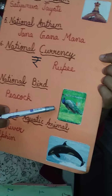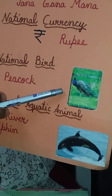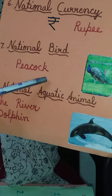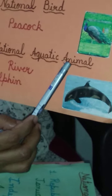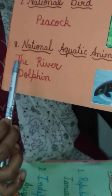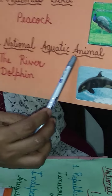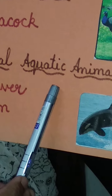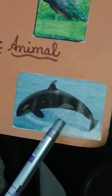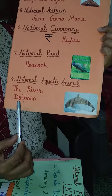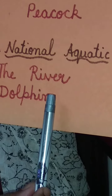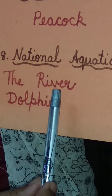This is our national bird. What was our national bird's name? It is called the peacock. The national aquatic animal is the river dolphin. The word 'aquatic' means animals that live in water. So the river dolphin — where do you find it? You find it in the fresh waters of river Ganga in India.